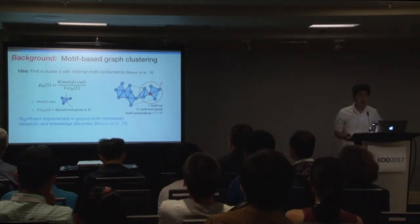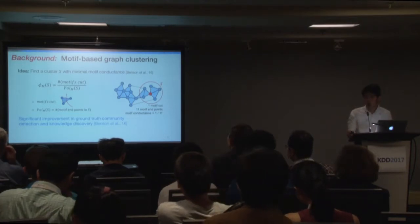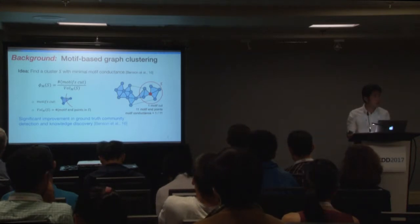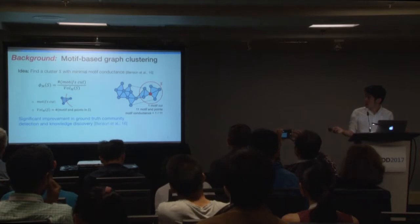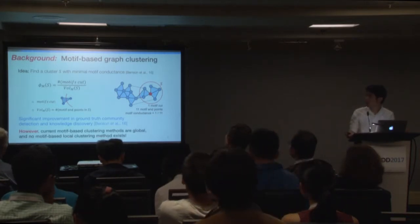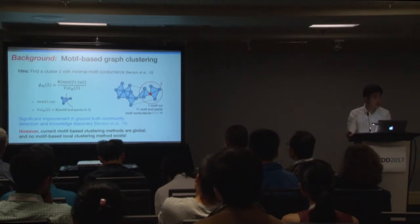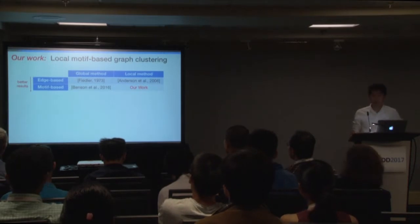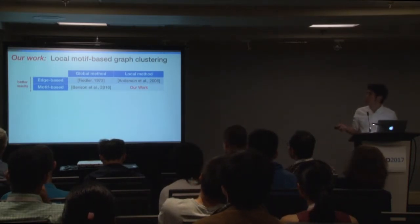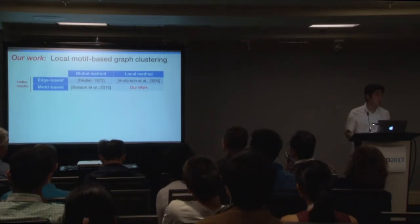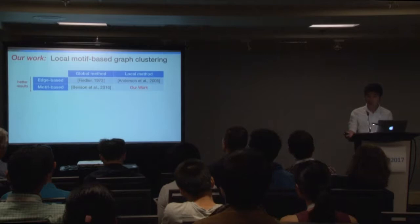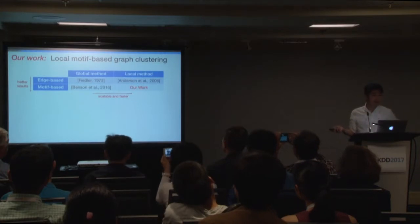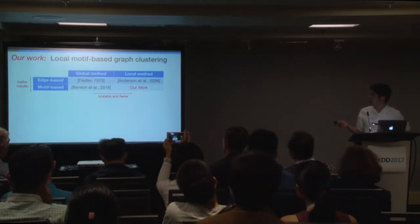The recent work has shown significant improvement both in ground truth community detection and knowledge discovery when using the motif-based method compared with the edge-based method. However, this existing method is a global method, and there are no motif-based local clustering algorithms. In summary, the motif-based method can have much better performance than the edge-based method, but we still need a local method to make the motif-based approach scalable and faster. And this is what our work is about.